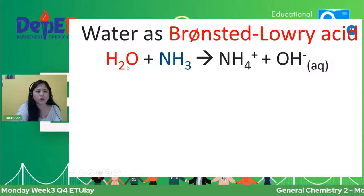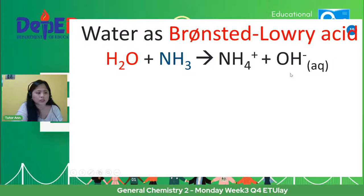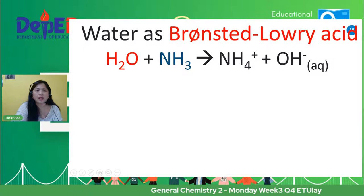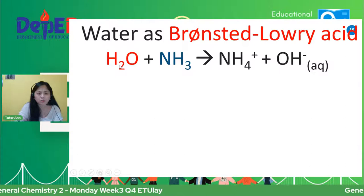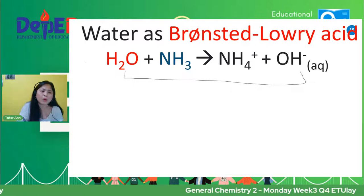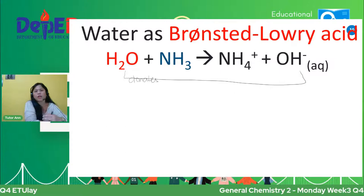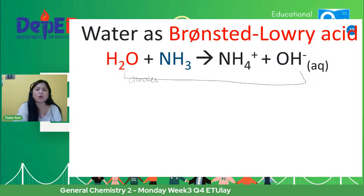You will see that in this equation, si water, when it reacts with ammonia, it forms ammonium ion and hydroxide ion. In this case, makikita nyo si H2O — this H2O becomes OH. Nabawasan siya ng isang hydrogen. Ibig sabihin, this water donates a proton. Nagdonate siya ng proton. In this equation, si water ay nagdonate, so considered siya na Bronsted-Lowry Acid.